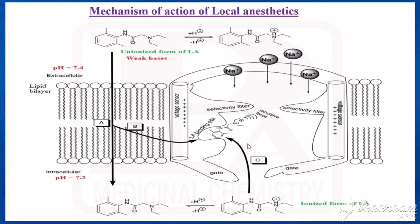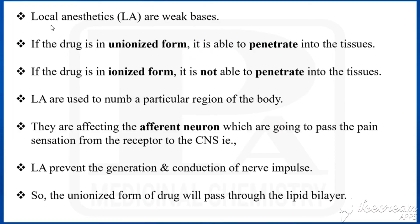This ionized form of the local anesthetic is going to bind with the local anesthetic binding site, producing local anesthesia. Local anesthetics are weak bases. The unionized form is able to penetrate tissues, while the ionized form is not. The main action of local anesthetics is to numb a particular region of the body by affecting the afferent neurons that pass pain sensation from the receptor to the CNS, thereby preventing the generation and conduction of nerve impulses.